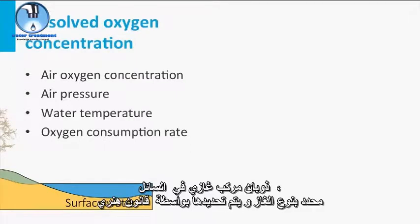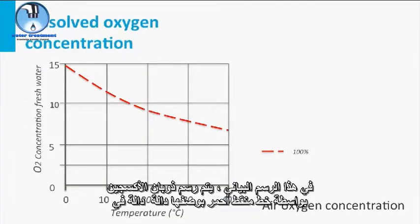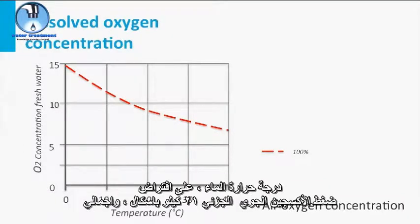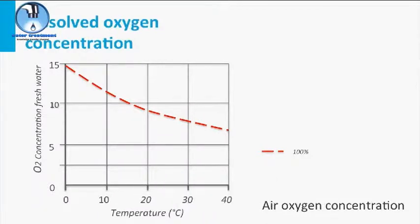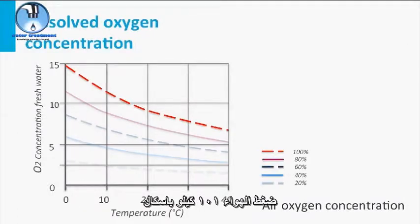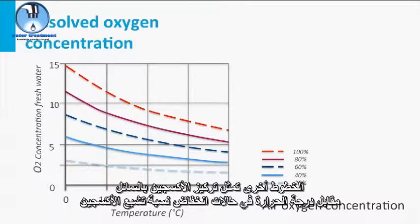The liquid solubility of a gaseous compound is gas-specific and is determined by Henry's law. In this graph, the oxygen solubility is plotted by the red dotted line as a function of the water temperature, assuming an atmospheric oxygen partial pressure of 21 kPa and a total air pressure of 101 kPa. Other lines represent the liquid oxygen concentration versus temperature at lower oxygen saturation percentages.